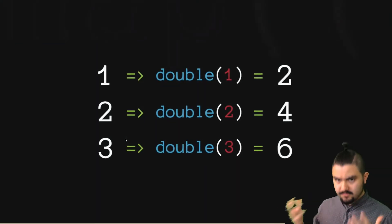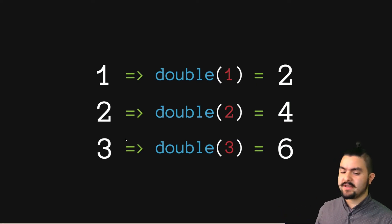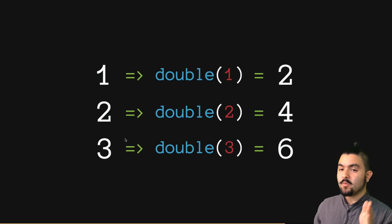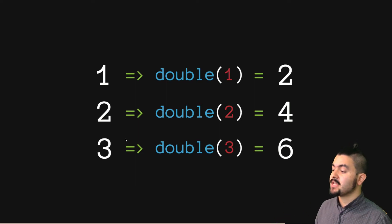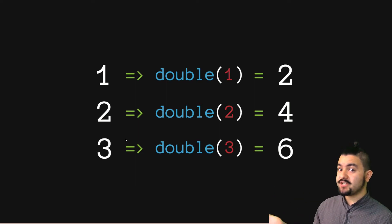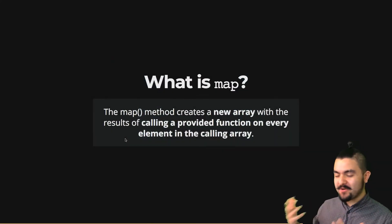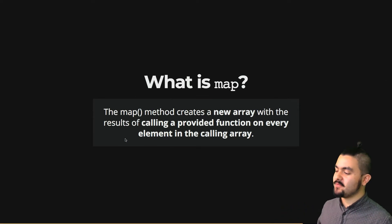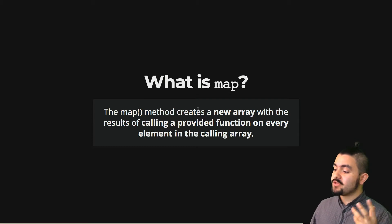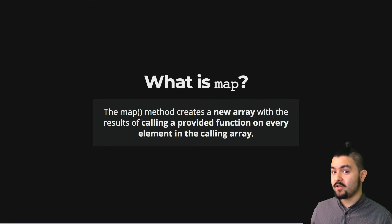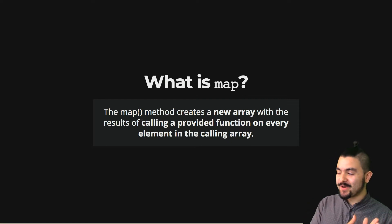Thinking back to what is actually happening here: we start with one array, we run each value in that array through some function that results in a new value for each value in the original array, and now we have a new array with some new values in it. The map method creates a new array with the results of calling a provided function on every element in the calling array — so we called double on every element in the original array to get our result array.